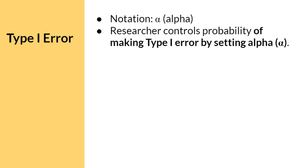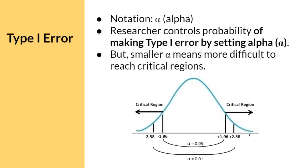The researcher controls the probability of making a type 1 error by setting this alpha, or setting the significance level p. Some students ask why don't we just set our significance level lower than .05 so that we don't make a type 1 error? The answer is, the smaller the alpha, or the smaller the significance level p, the harder it is to reach those critical regions. This graph shows the critical regions of alpha, or significance levels of 0.05 and 0.01. With an alpha of 0.05, the critical region is much bigger than with an alpha of 0.01. As a researcher, we must balance the need to reduce type 1 error with a realistic-to-reach critical region.